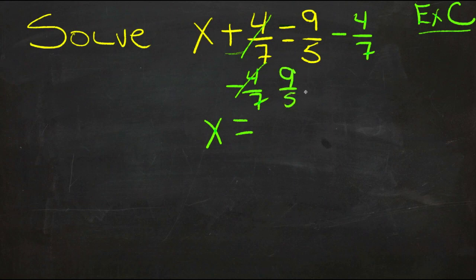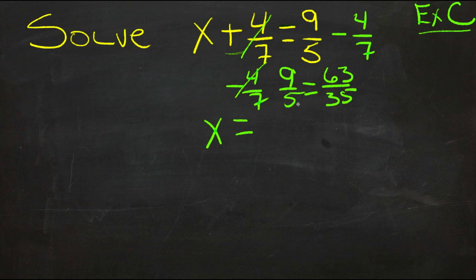9/5 would be the same thing as some number of 35ths. And since we had to multiply 5 by 7 to make it 35, we can multiply 9 by 7 to get the same thing. And we'll get 63. So 9/5 is the same thing as 63/35.